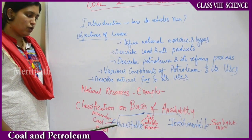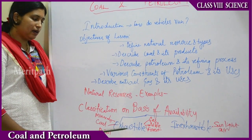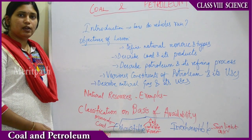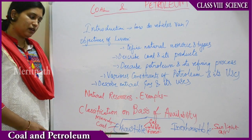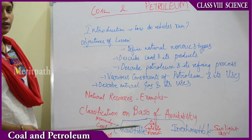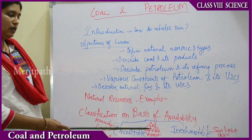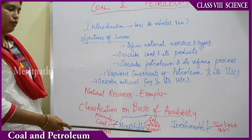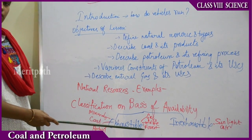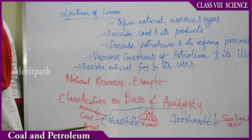Exhaustible means they can be over at any time — they can get completed. Exhaustible resources are always limited; they are not freely and always available. Examples of exhaustible natural resources are gas, wildlife, forests, trees, minerals in the earth, coal, and petrol and its products.